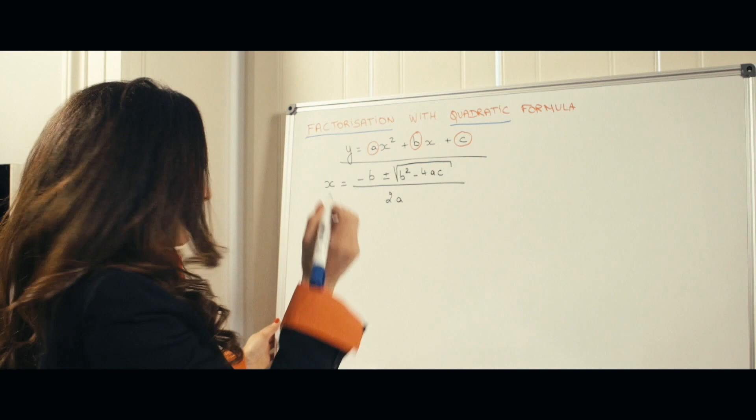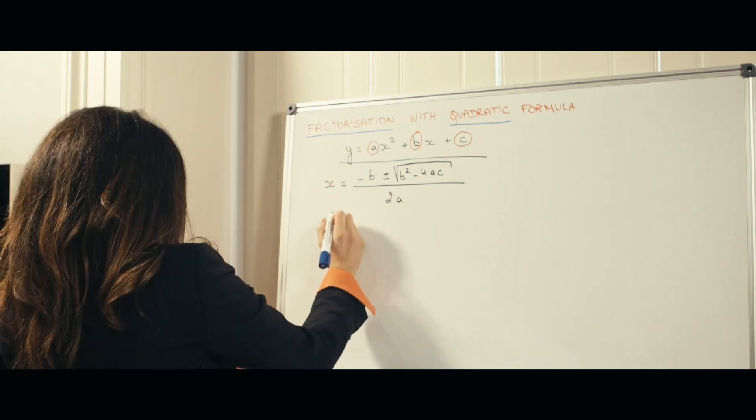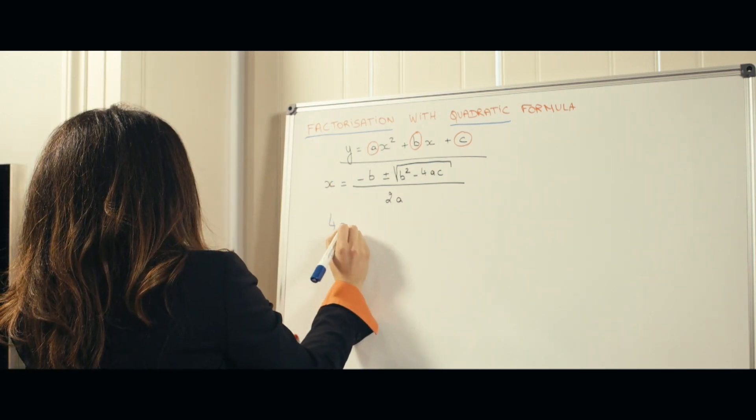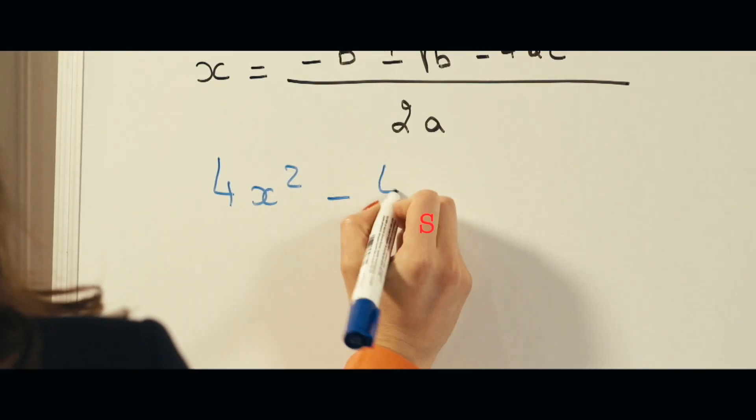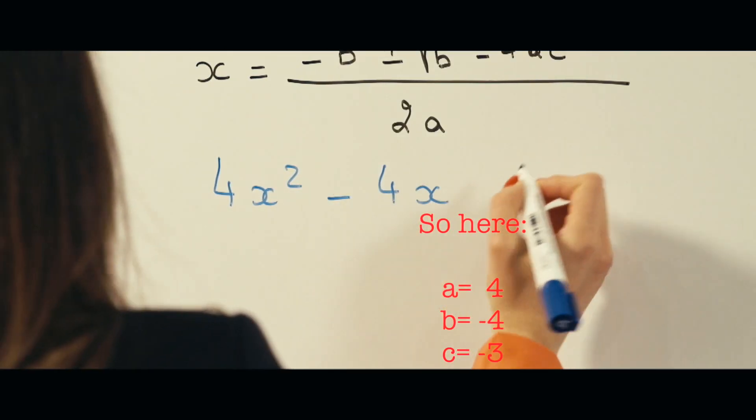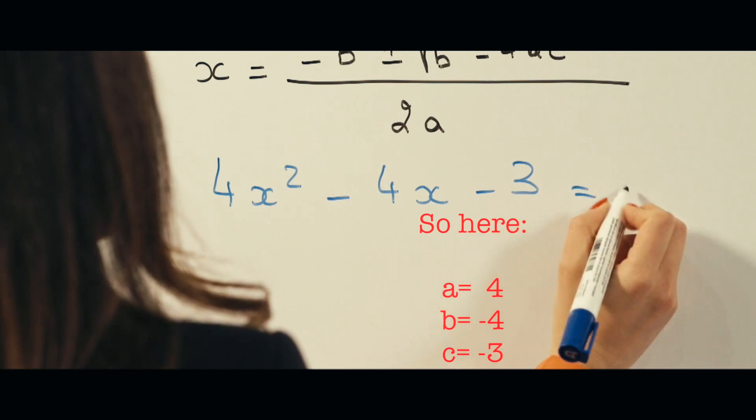So now let's pick an example. Let's say we're trying to find the solution to 4x squared minus 4x minus 3 equals 0.